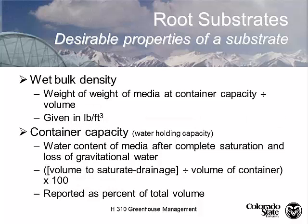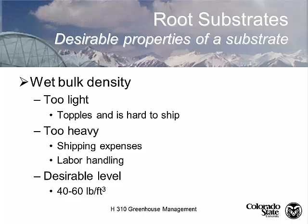The wet bulk density is the weight of your potting soil at what we call container capacity. Container capacity changes with how your mix is put together. It's defined as the water content of your potting medium after we've completely saturated it and then allowed it to drain, losing what we call gravitational water — in other words, letting the pot drip. We do this as a percent volume. We typically want about 40 to 60 pounds of container capacity per cubic foot.